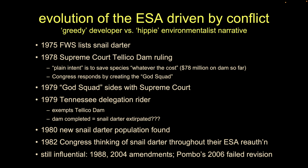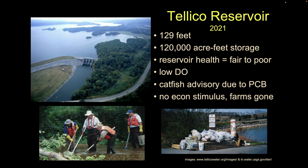This case completely colored the debate going forward. When the ESA came up for reauthorization in 1982, this was on everybody's tongue. It's still super influential and you'll hear the snail darter cited on Fox News and elsewhere. But look at what those advocates actually got — as of 2021 data from the TVA's own website: the reservoir water quality is fair to poor, with poor quality 62.5% of years, often with low dissolved oxygen and associated fish kills, PCB contamination, no economic stimulus, and the area is still a very poor part of the country.